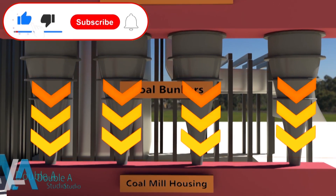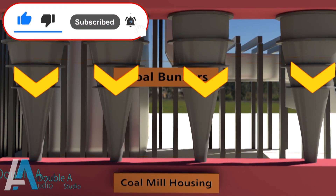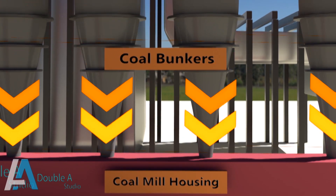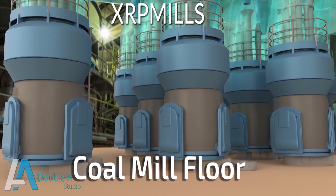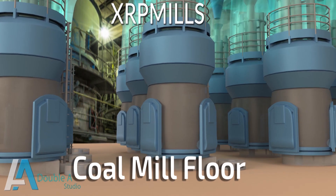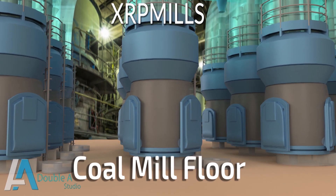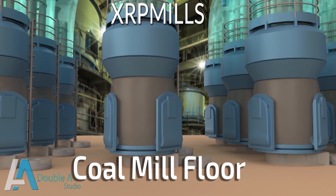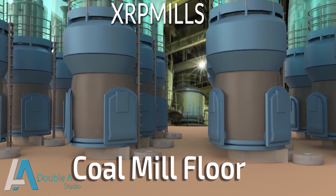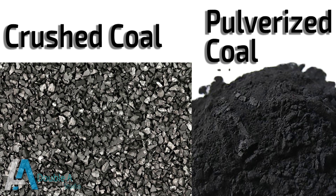This video is about coal mills, also known as pulverizers. We will go through their structure, different parts, role, and function. We have seen that coal bunkers feed crushed coal to pulverizers for grinding. It reduces coal to almost powder form; however, the size depends upon the raw coal size, moisture content, and desired fineness level.